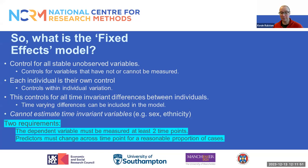Because all time-invariant differences between individuals are incorporated in the fixed effect, we cannot estimate time-invariant parameters within a fixed effect framework. This can be a problem and is likely to pose problems for many substantive research issues. For example, if we're interested in sex or ethnicity, this is unlikely to vary within an individual over time, so we cannot estimate parameters for these in a fixed effect model.